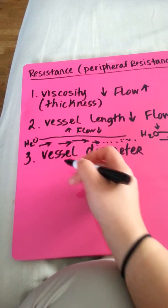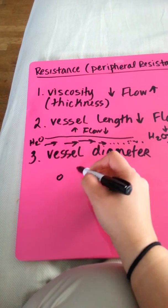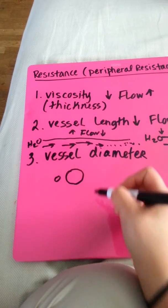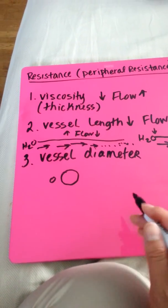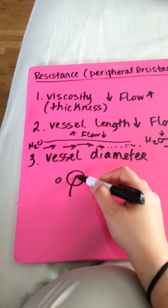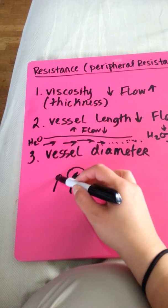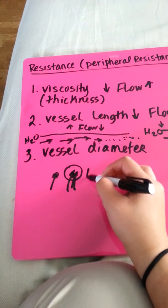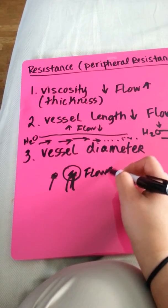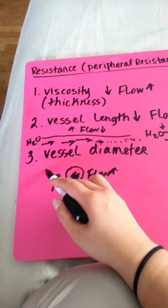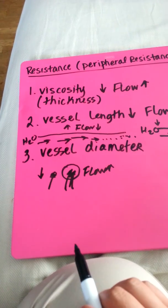Vessel diameter, it's basically something like this versus something like this, alright. So yes, blood flow is going to go a lot quicker in here versus in here. So the bigger the diameter, the flow increases, smaller diameter, flow decreases.